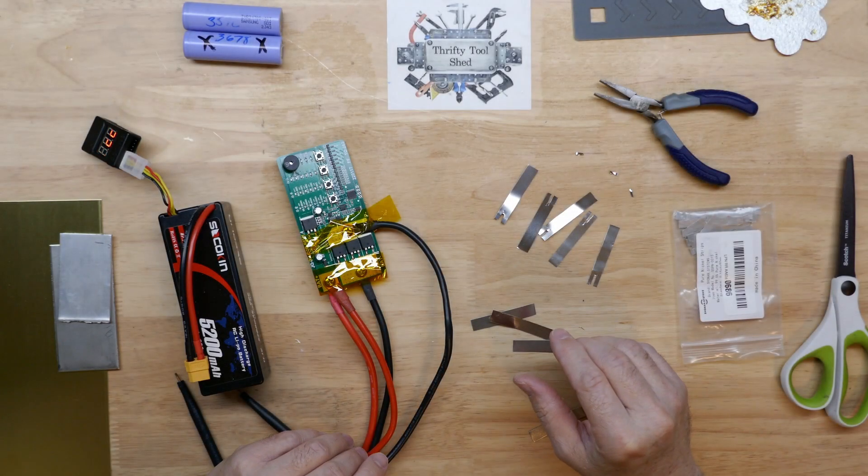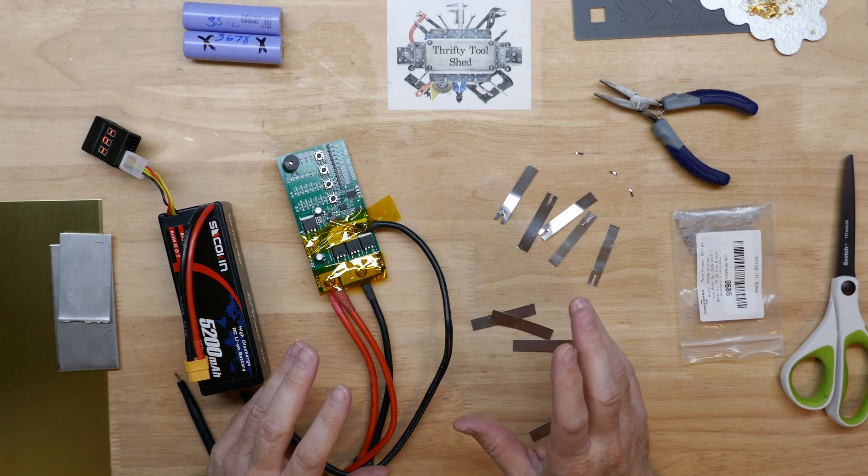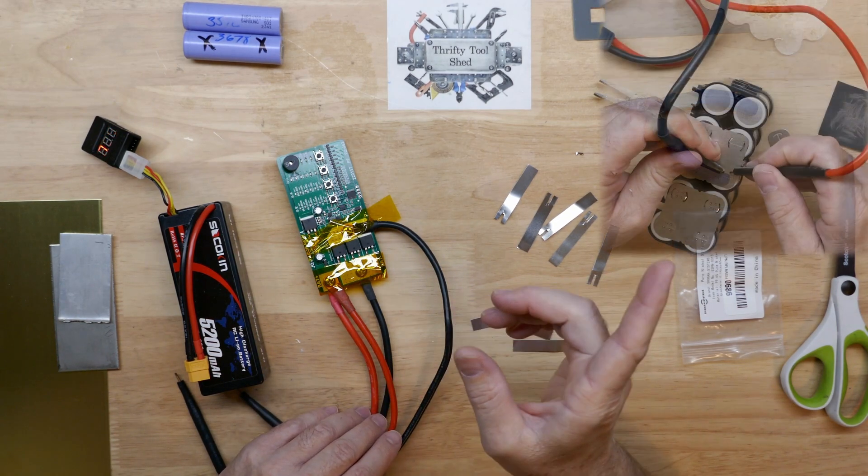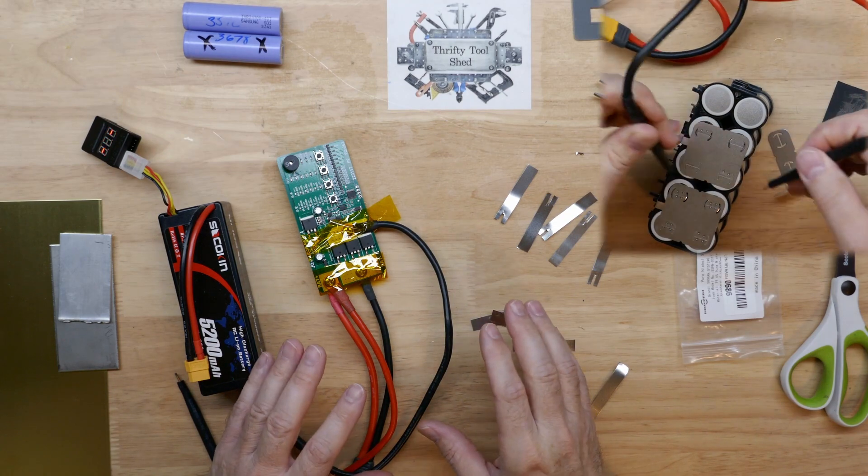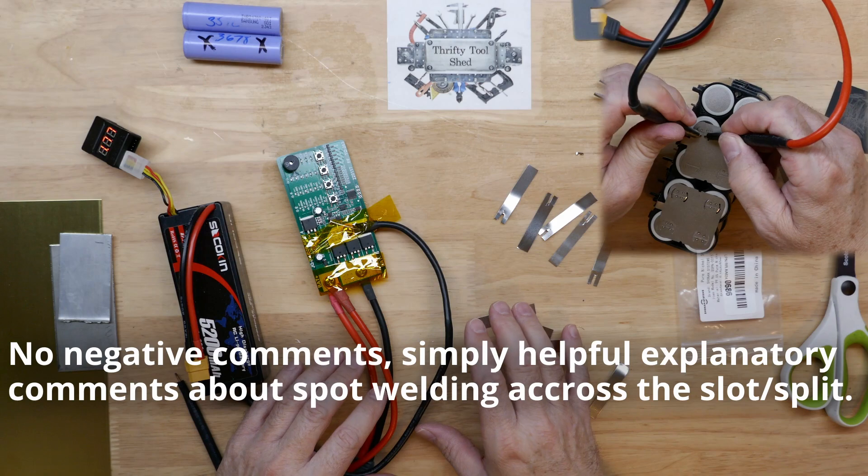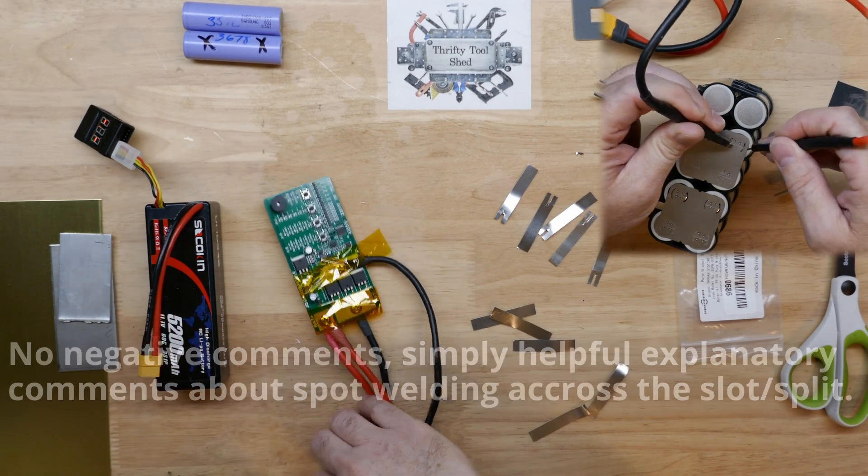Today I thought we'd do a quick video on spot welding. The reason for this video comes from the last battery repair video that I made, as I was spot welding the nickel strips on the battery. There were some comments about the way I was spot welding on the battery. Instead of going across the slot or slit, I was putting mine close together and spot welding on the battery.